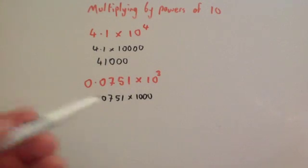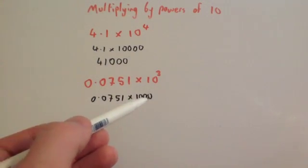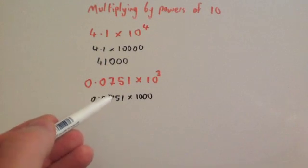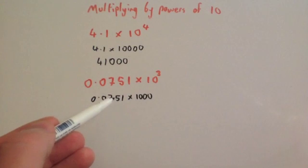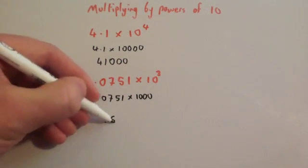And then you just need to move the decimal place three places, 1, 2, 3 places to the right. So it's going to go 1, 2, 3. So it's in between the 75 and the 1, so between the 5 and the 1. So you're just going to do 75.1.